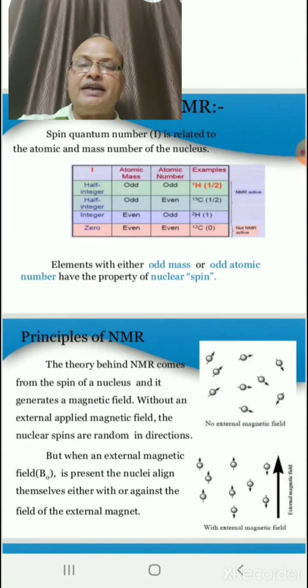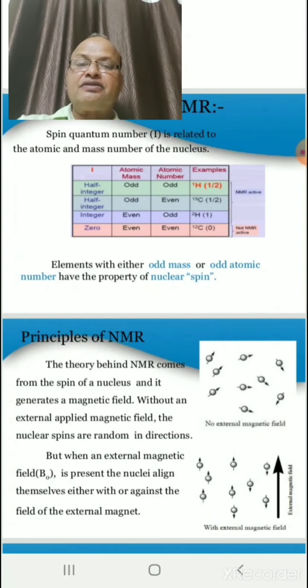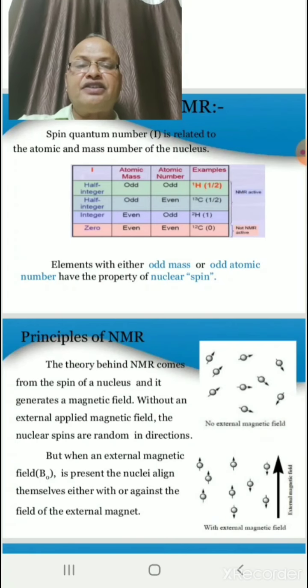But when an external magnetic field B0 is present, the nucleus align themselves either with or against the field of the external magnet.